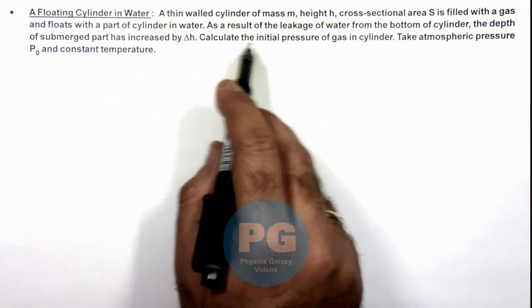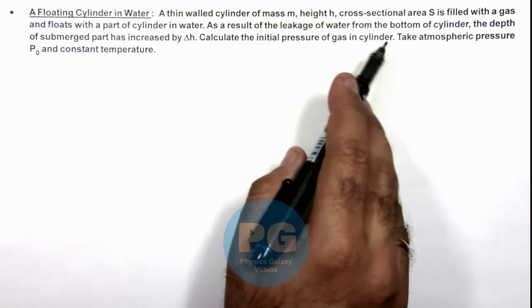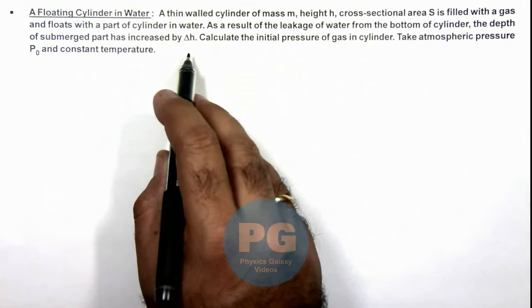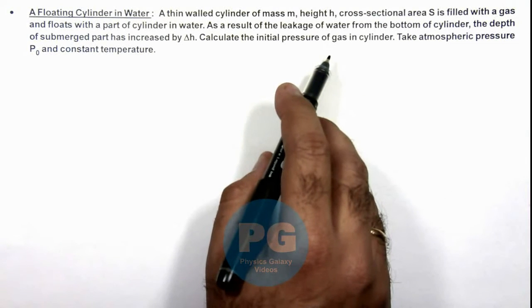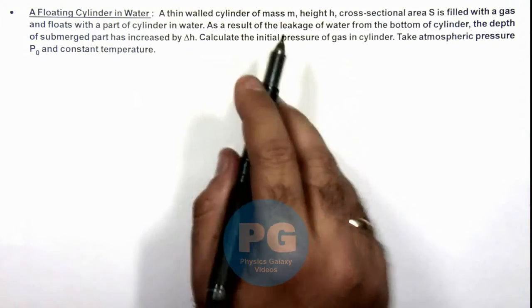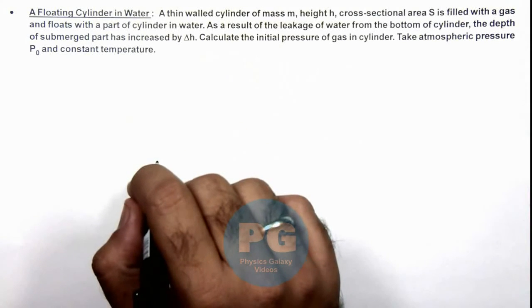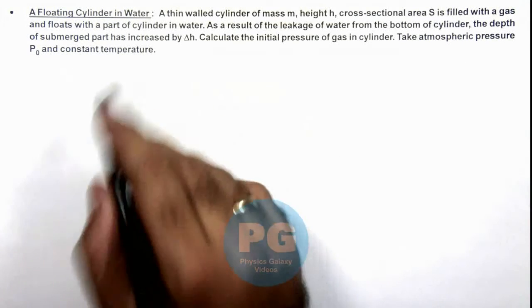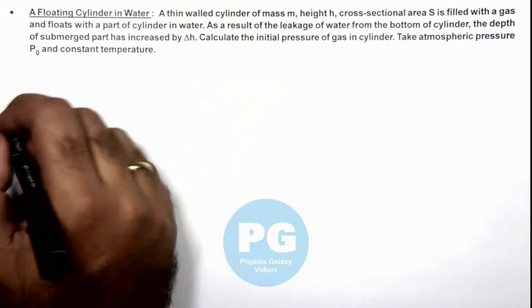As a result of the leakage of water from the bottom of cylinder, the depth of submerged path has increased by delta h. Some water seeps in the cylinder and due to which, further it will sink down by a distance delta h. We are required to find the initial pressure of gas in the cylinder. Take atmospheric pressure as P₀ and the temperature we can consider as constant.